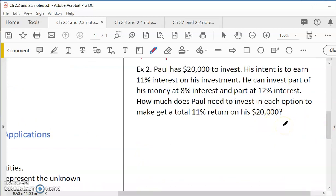Example three. Paul has $20,000 to invest. His intent is to earn 11% interest on his investment. So the total interest that he won from this investment is 11%. He can invest part of his money at 8% interest and part at 12% interest. So this is all he has. But he can split it into two parts so that one of it is 8%, the other is 12%. How much does Paul need to invest in each option to make a total of 11% return on his $20,000? So what do we know? We know that the total is $20,000. Total investment.